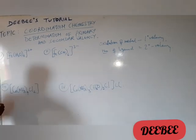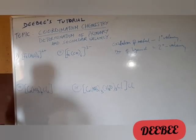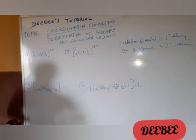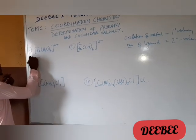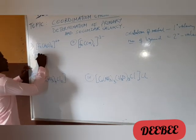So if you look at this coordination compound, this is hexa aqua iron 2. We want to determine now the primary valence. The primary valence here.